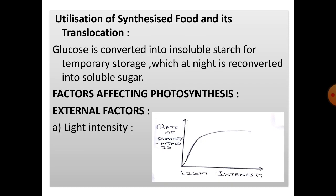Utilization of synthesized food and its translocation. Whatever food is manufactured in the leaf is required for use by all other parts of the plant. But the glucose cannot be transported in the rapidity it is formed, so it is converted into insoluble starch for temporary storage. At night it is reconverted into soluble sugar and transported to all other parts of the plant.